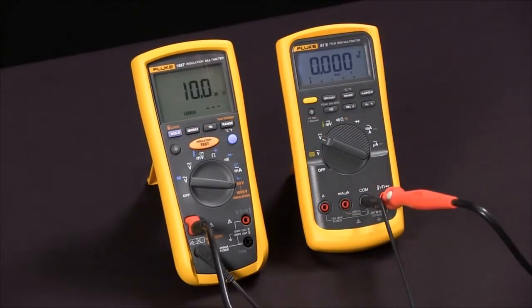Keep in mind that insulation resistance values vary with temperature and humidity, and that's how we measure insulation resistance with our Fluke 1587 multimeter.